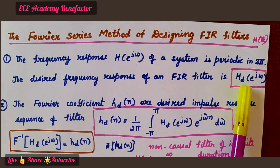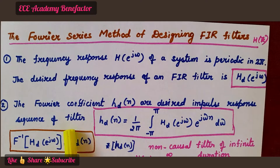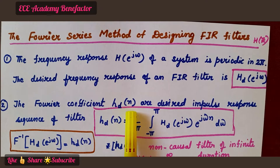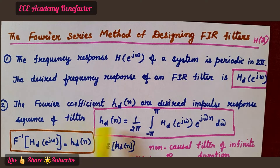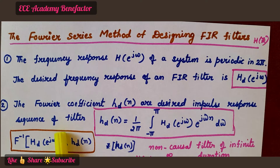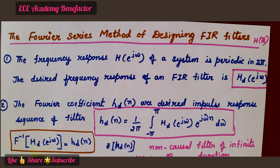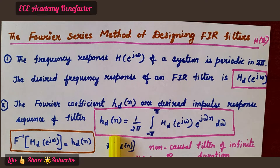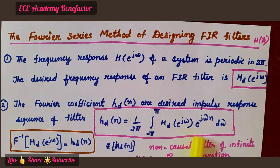Based on this desired frequency response, we have to calculate the second step: the Fourier coefficient. The Fourier coefficient H_d of n is the desired impulse response sequence of the filter. How can we find H_d of n? The Fourier inverse of H_d of e to the power j omega — the Fourier inverse of the desired frequency response — gives H_d of n, which is the Fourier coefficient. The formula is: H_d of n equals 1 over 2 pi, integral from minus pi to pi of H_d of e to the power j omega, times e to the power j omega n, d omega.